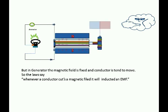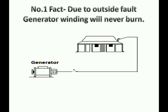Now we can go into the topic. Number 1 interesting thing: when we run a generator at home or in a power plant, if any fault occurs, the fault current will not burn the winding of the generator. Why is it not burning? We can see this a little briefly.